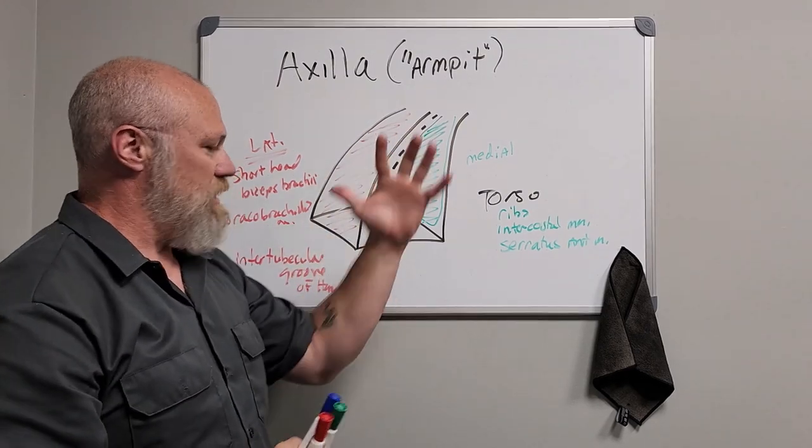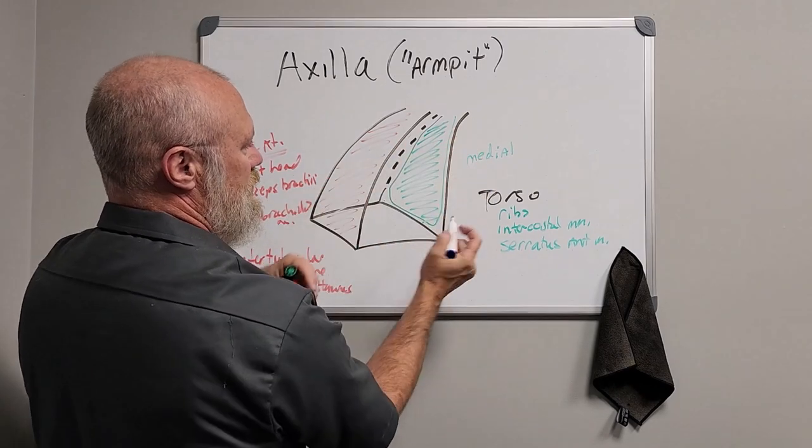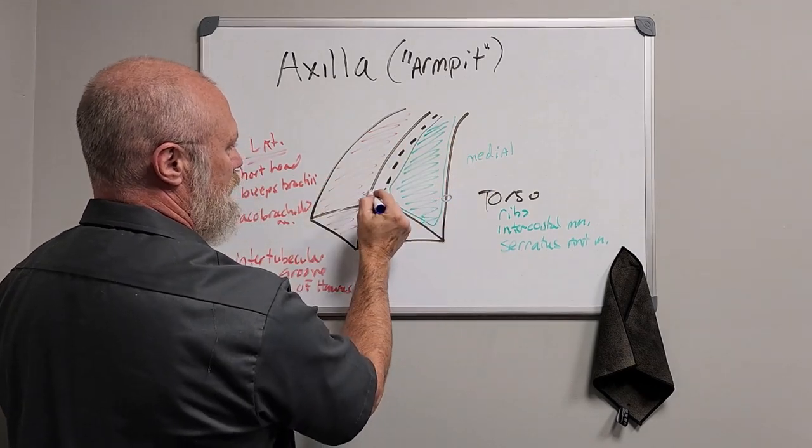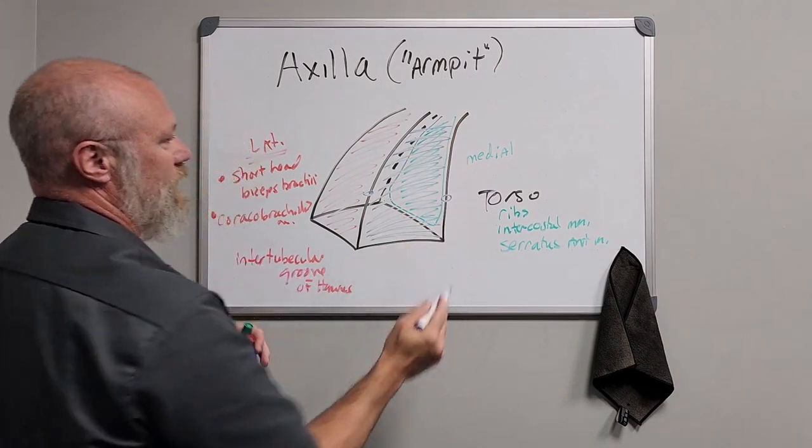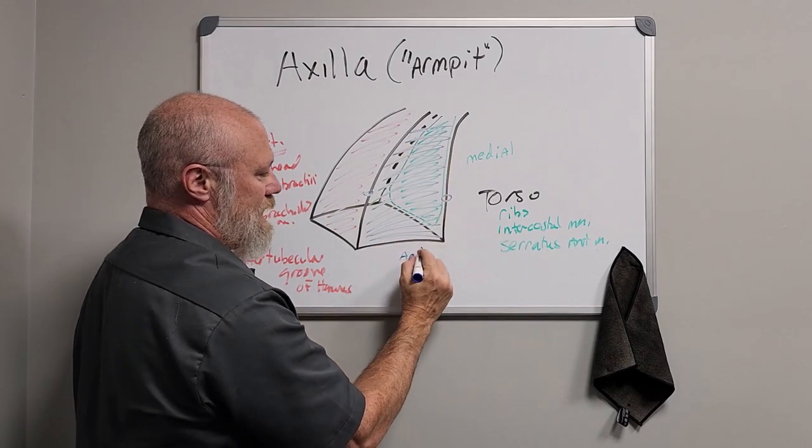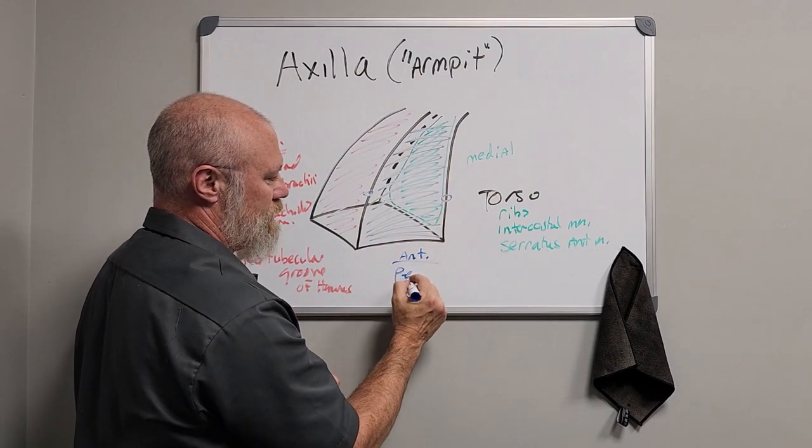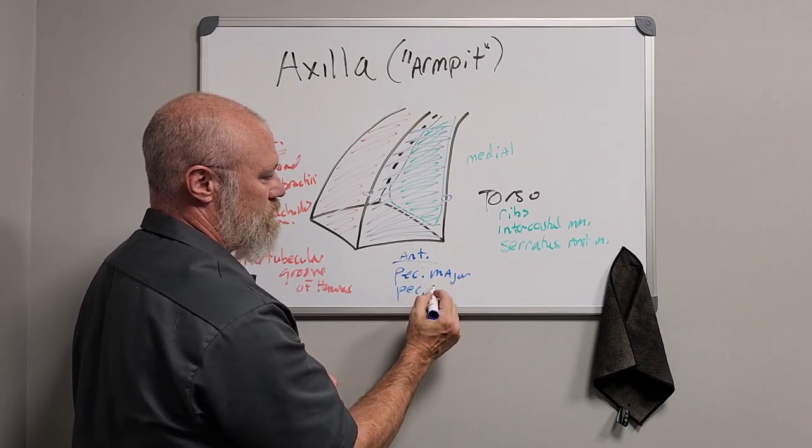This anterior, which is going to be this surface here between this pole and that hole, which I'll kind of shade in blue, this anterior surface or anterior boundaries will be made up of pec major, pec minor.